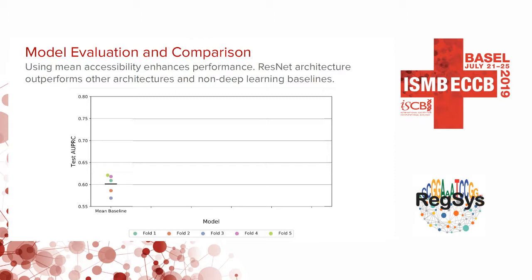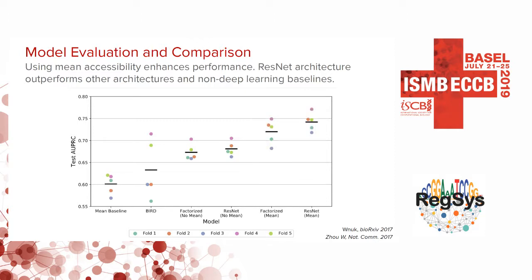We use a dataset from the ENCODE project with chromatin accessibility for over 123 cell types with matched RNA-seq. Using five-fold cross-validation, the mean baseline achieves an AUPRC of around 0.6. A non-deep-learning baseline from Zhao's 2017 Nature Communications paper beats this. Two deep learning architectures — the factorized model based on the Anouk paper and our residual neural network — both outperform non-deep-learning alternatives. Adding the mean as an additional input substantially boosts performance, with the residual neural network with mean outperforming all methods.